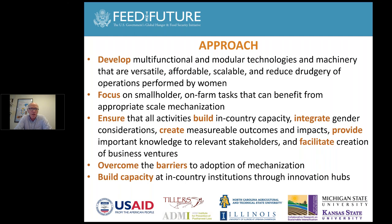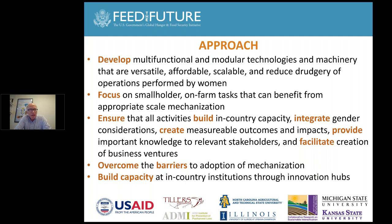The approach we are following is to develop multifunctional and modular technologies and machinery that are versatile, affordable, scalable, and reduce the drudgery of operations especially for women. We are focusing on smallholder on-farm tasks, building in-country capacity, integrating gender considerations, and ensuring measurable outcomes and impacts. An important part is developing knowledge for relevant stakeholders in each country and facilitating the creation of business ventures. Overcoming existing barriers to mechanization adoption is a key part of this, and we are building in-country capacity through what we call innovation hubs.